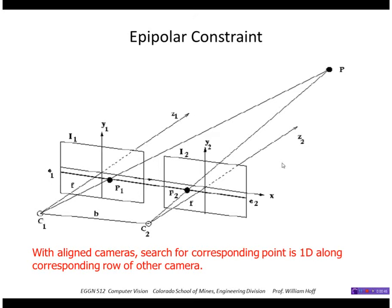If I have a left and right camera aligned here, I know the centers of the two cameras, C1 and C2. If I see a point P1 in one image, I know the 3D point must lie along a ray. Those three points form a plane, and the intersection of that plane with the image plane is a line called the epipolar line. I can calculate that line in the other image, and I know the projection of the point must lie along that line — so instead of searching the entire image, I just search along that line.